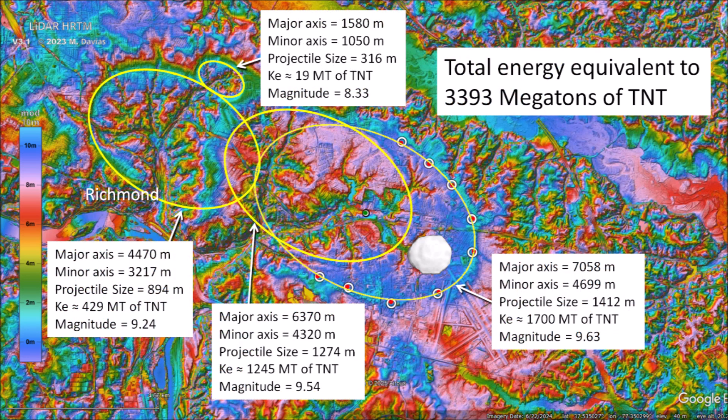A single impact is very impressive, but it is small compared to the combined ballistic sedimentation of four glacier ice projectiles which had a combined energy equivalent to 3,300,293 megatons of TNT. The tiny basin at the top of the image has a major axis of 1,580 meters. It was made by an impact with kinetic energy equivalent to 19 megatons of TNT and generated seismic vibrations of magnitude 8.33.